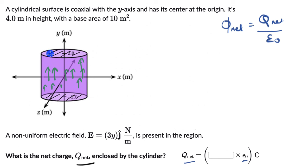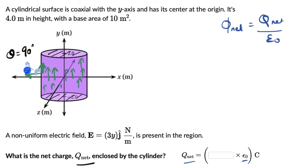The electric field is parallel to the y-axis, so let's think about the flux through the sides first. The area vector on the sides points radially outward, which is perpendicular to the electric field. The angle θ between them is 90°, and since flux = E · A involves cos θ, cos 90° = 0. There is no flux through the sides.